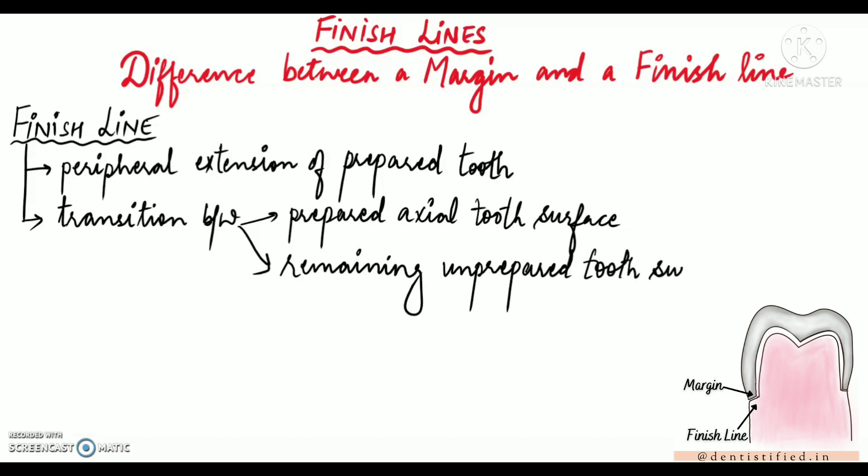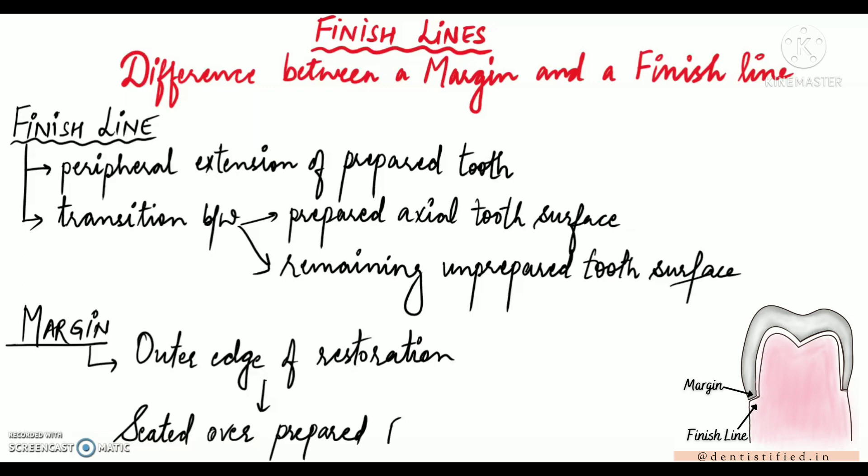Now what is the margin of a restoration? So margin of restoration is the outer edge of the restoration that lies on the prepared finish line of the tooth, or we can say which is seated over the prepared finish line. This means that margin of the restoration comes in contact with the finish line that is prepared on the tooth as we can see here in the diagram.